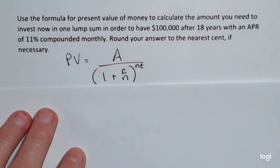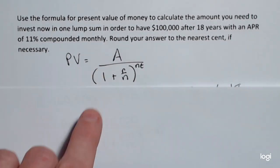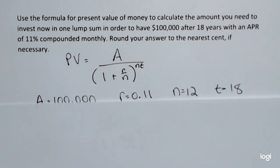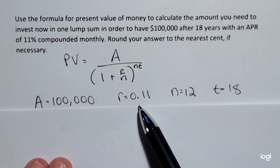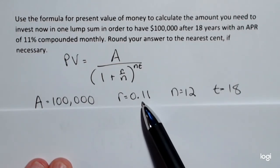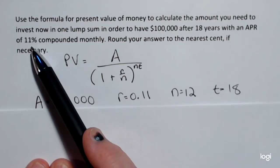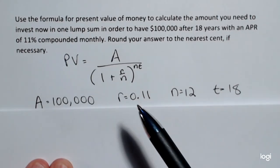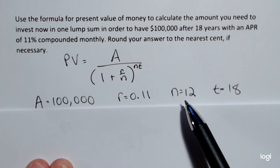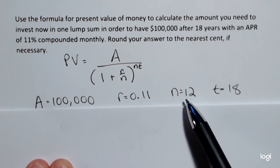The pieces we need for the formula will be A, the ending amount after 18 years, that's $100,000. The interest rate as a decimal is 0.11 because we are compounding with a rate of 11% monthly. N is the number of times you compound per year, and if we compound monthly, then N will be 12.